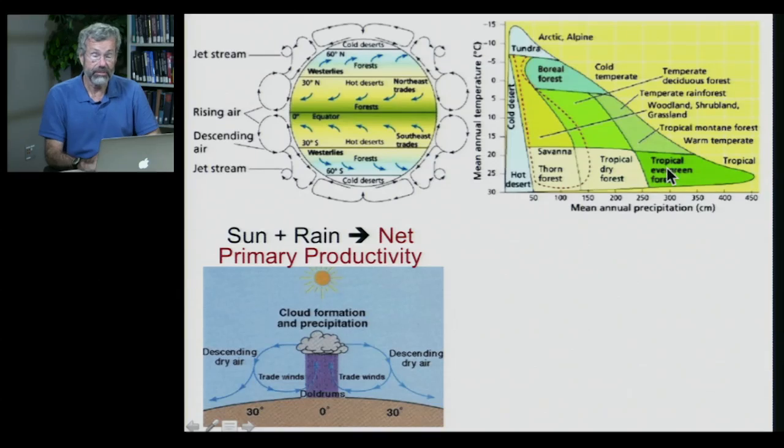Now where you have more precipitation and you have nice warm temperatures, that's the place we'd all like to be at this time of year in Minnesota. We'd rather be down in the equator in a tropical evergreen forest. If there's not as much rainfall but it's still warm, then in these hotter climates you get dry forest, thorn forest or even hot desert.